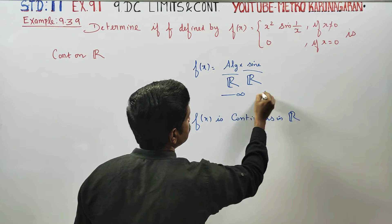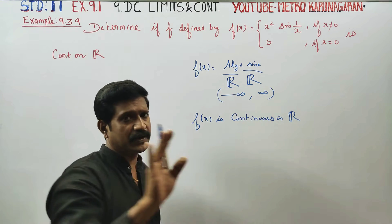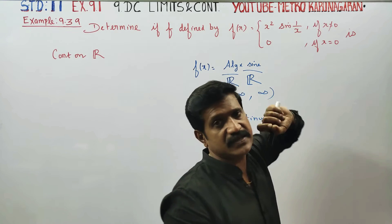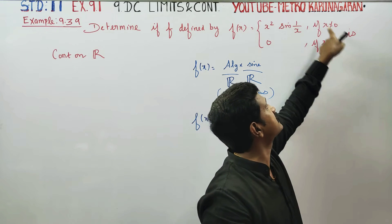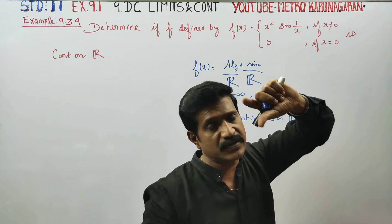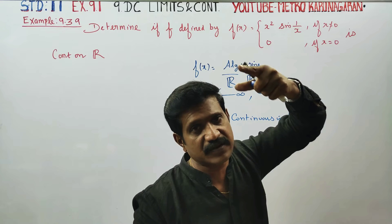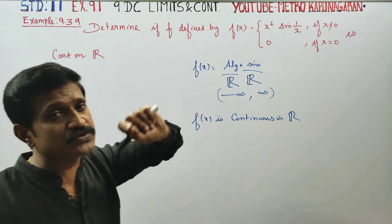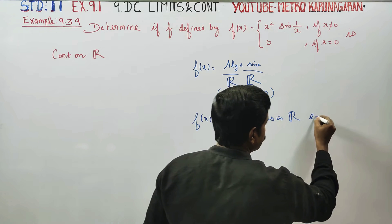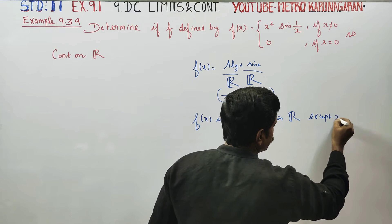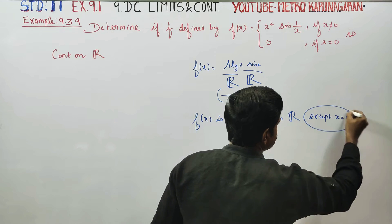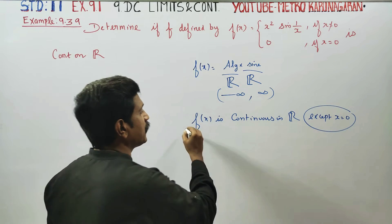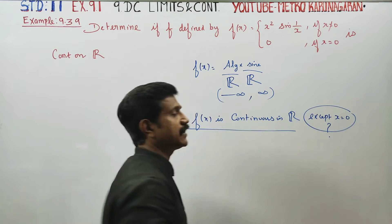Real numbers means from minus infinity to plus infinity. F of x is equal to 0 — if you have a problem, we will check it. This is a small problem: zero. It is continuous on R.